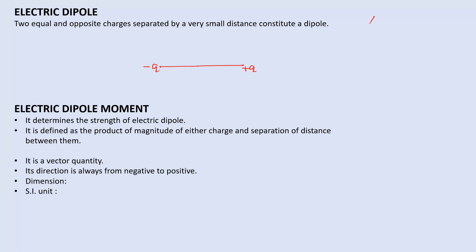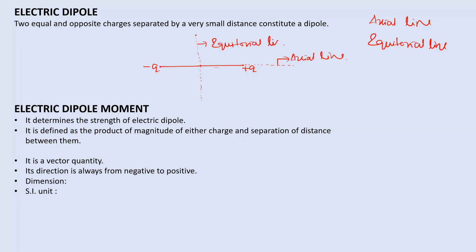When discussing dipoles, you need to know two terms: the axial line and the equatorial line. Any line along the distance between the charges is called the axial line. Any line perpendicular to this, passing through the center of the dipole, is called the equatorial line. These are two very important terms.